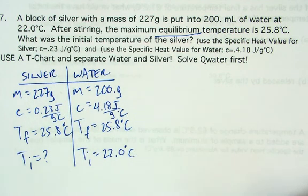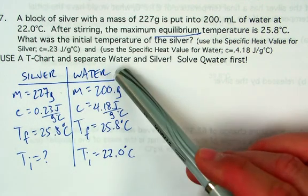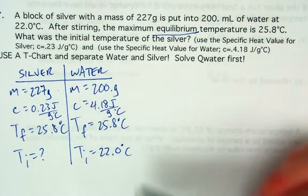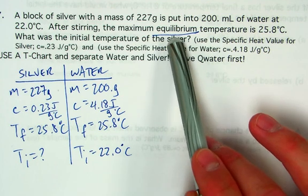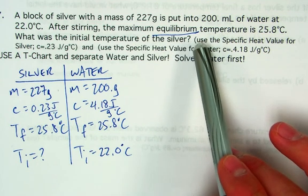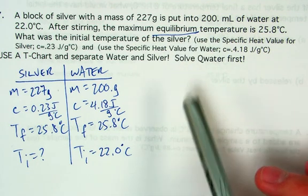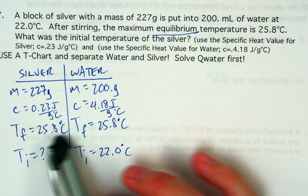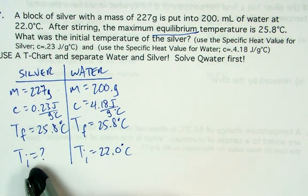In this type of problem we have a lot of information, so my suggestion is to make a T-chart to organize it — which is exactly what I've done. I've made a column for silver and a column for water, and put down their masses and specific heats. The maximum equilibrium temperature refers to the final temperature, so 25.8 degrees is the final temperature for both. We're solving for the initial temperature of the silver.